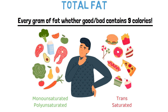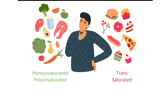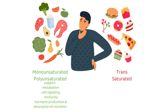They are called good and bad fats due to the positive or negative attributes associated with them. Good fats, such as avocados and most types of unsalted nuts, are beneficial as they support metabolism, cell signalling, immunity, hormone production, and absorption of nutrients such as vitamin A and vitamin D. Bad fats, like steak, butter, cheese, pizza and hamburgers, raise bad cholesterol while lowering good cholesterol.